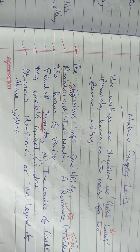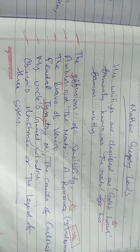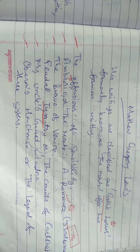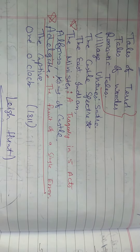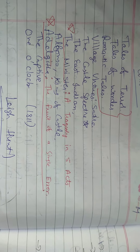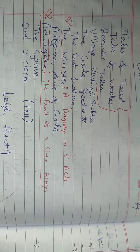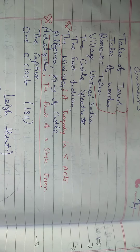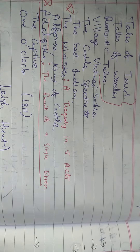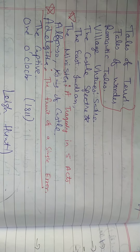His other works include The Bravo of Venice, Feudal Tyrants or The Counts of Karshaim, My Uncle's Garriot, Window Oberon's Hunchman or The Legend of Three Sisters, Tales of Terror, Tales of Wonder, Romantic Tales, Village Virtues (a satire), The Castle Specter, The East Indian, The Minister: A Tragedy in Five Acts, Alfonso King of Castle, Adelgitha: The Fruit of a Single Error, The Captive, and One O'Clock.